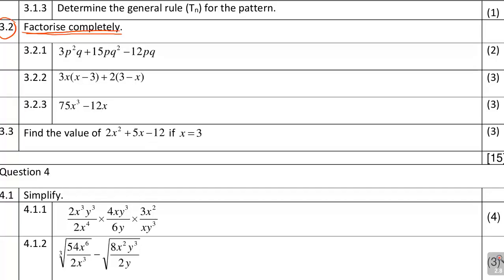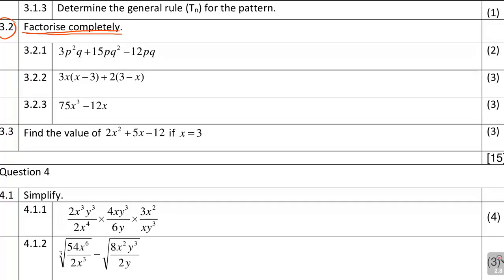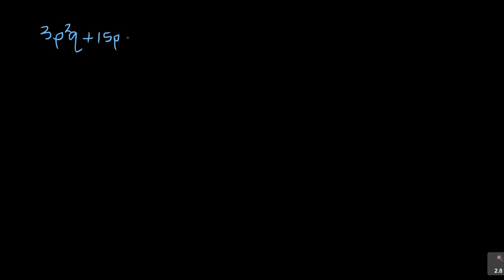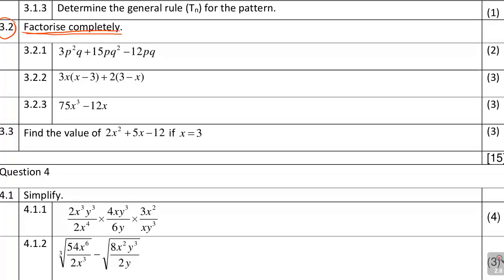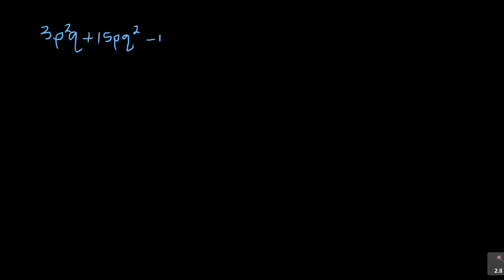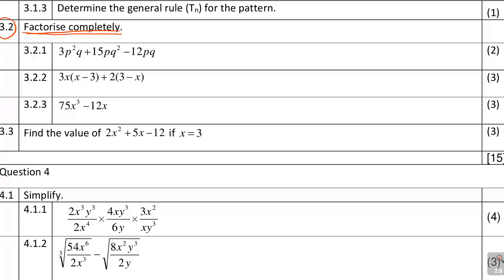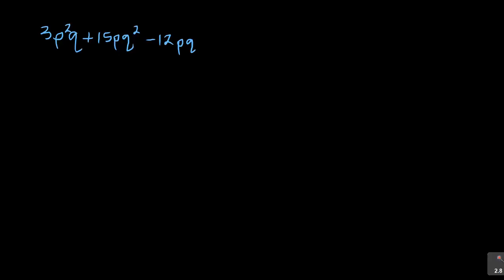For this 2-mark question, you are given 3p²q + 15pq² − 12pq. This question is 2 marks and they want you to factorise. For me to factorise, you need to take out what is common in each of the 3 terms. We've got 3 terms here — the first term, then after the sign you've got the second term, and after the sign you've got the third term.